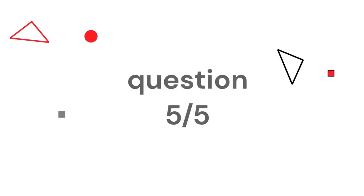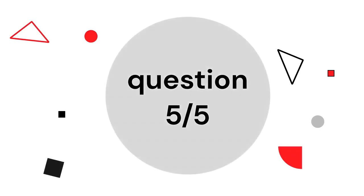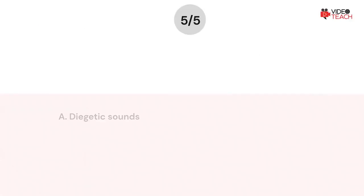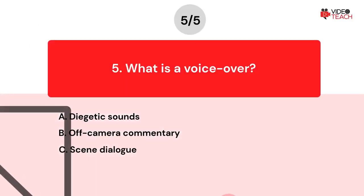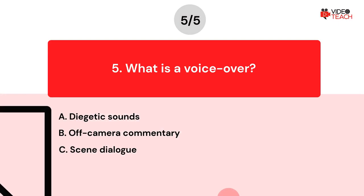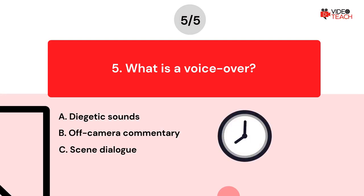Question number five. What is a voiceover? Option A: Diegetic sounds. Option B: Off camera commentary. Option C: Scene dialogue. Now you have about 15 seconds to think about your answer.